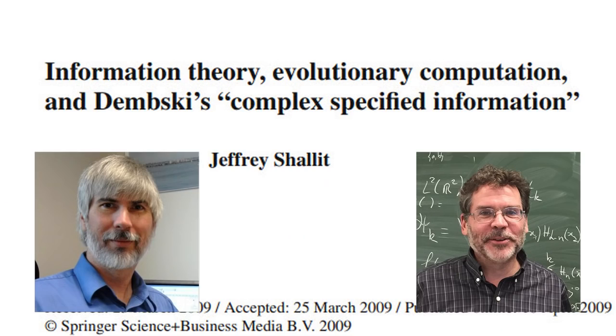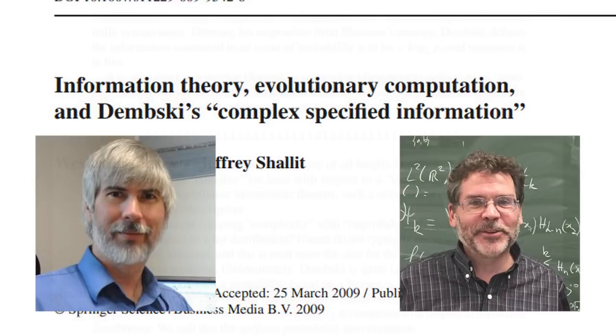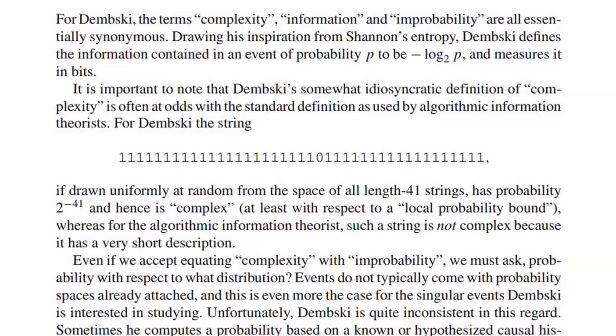At present, the scientific community, including Dembski, has yet to find any applications for his work. He typically attributes this to his work being misunderstood by others. Wesley Ellsbury and Jeffrey Shalett criticized his use of the words complexity, information, and improbability as if they were the same thing, and cited a calculation on page 297 of No Free Lunch that was off by a factor of 10^65.